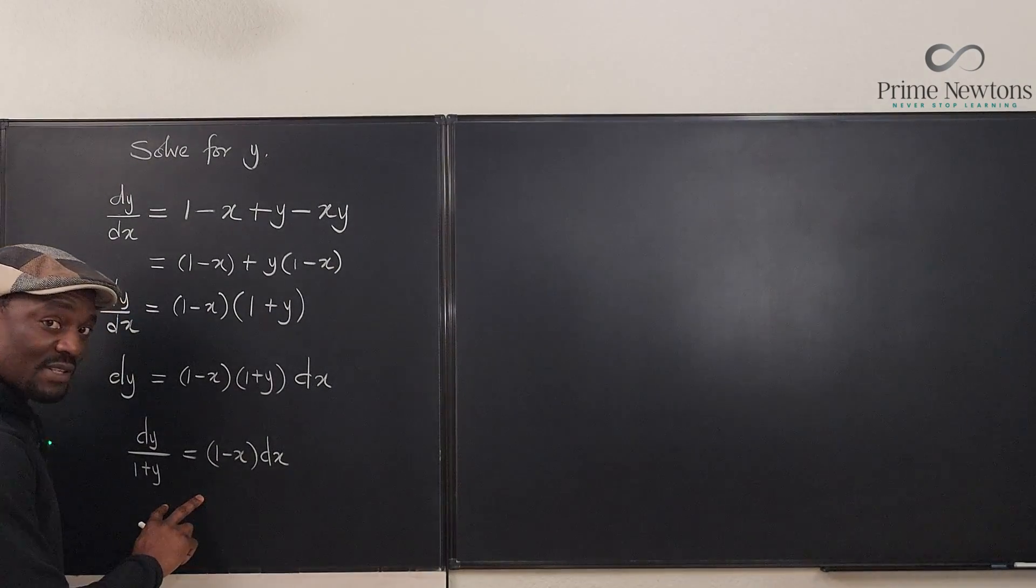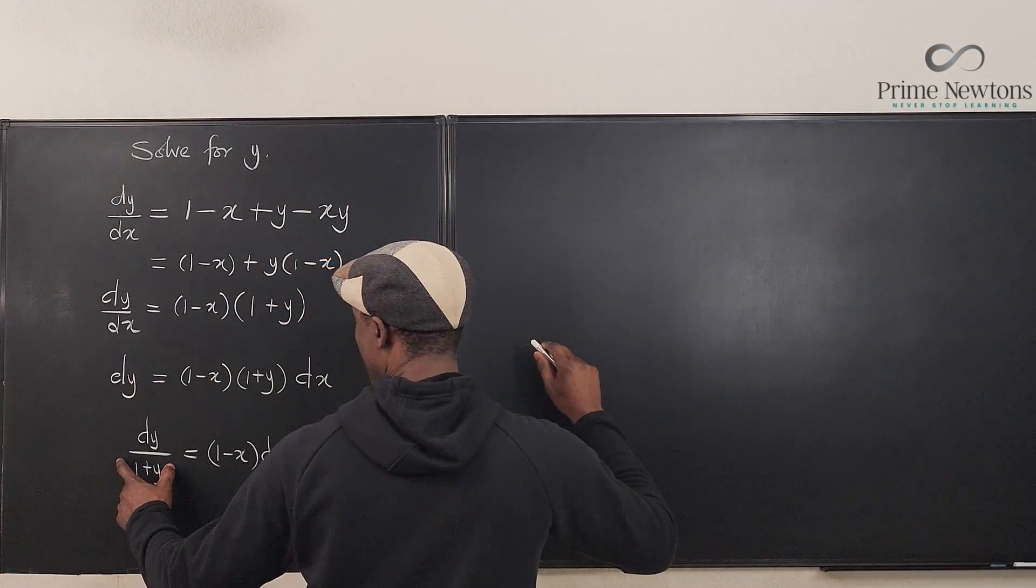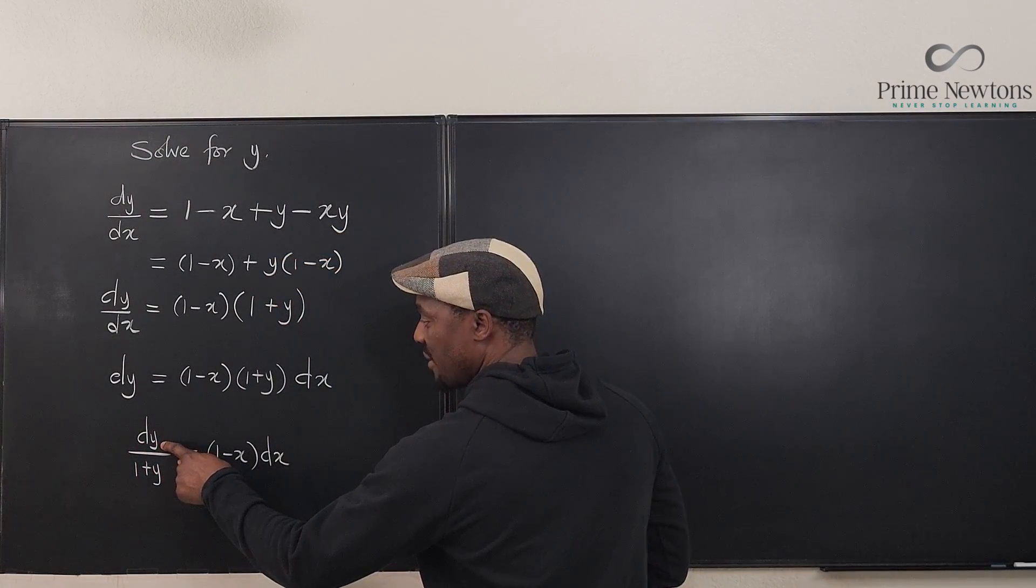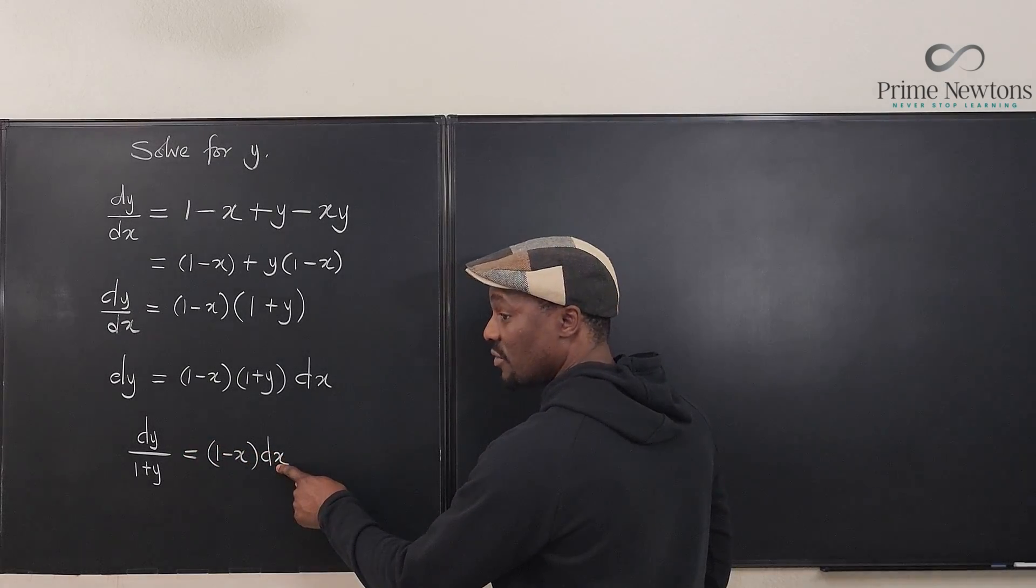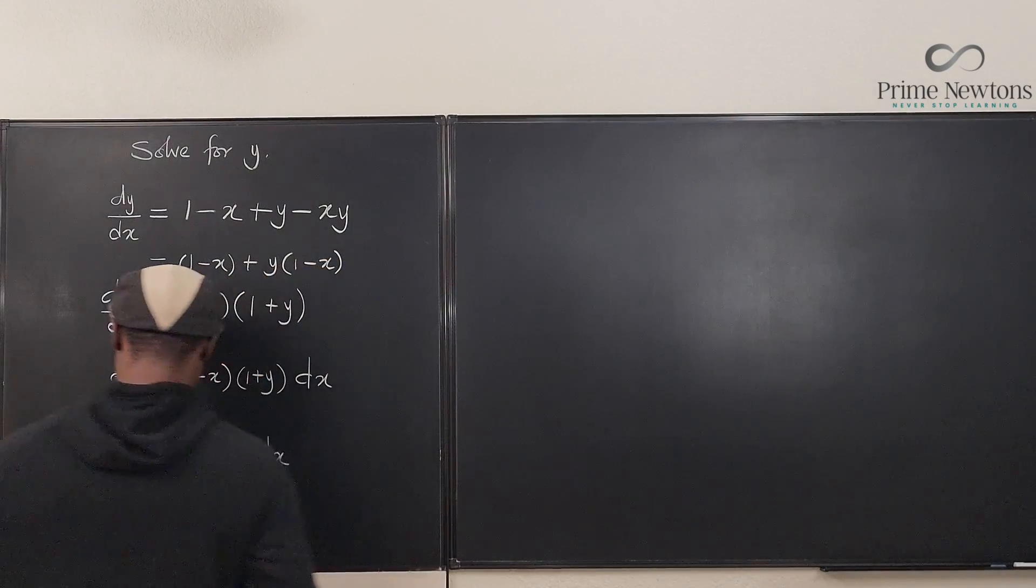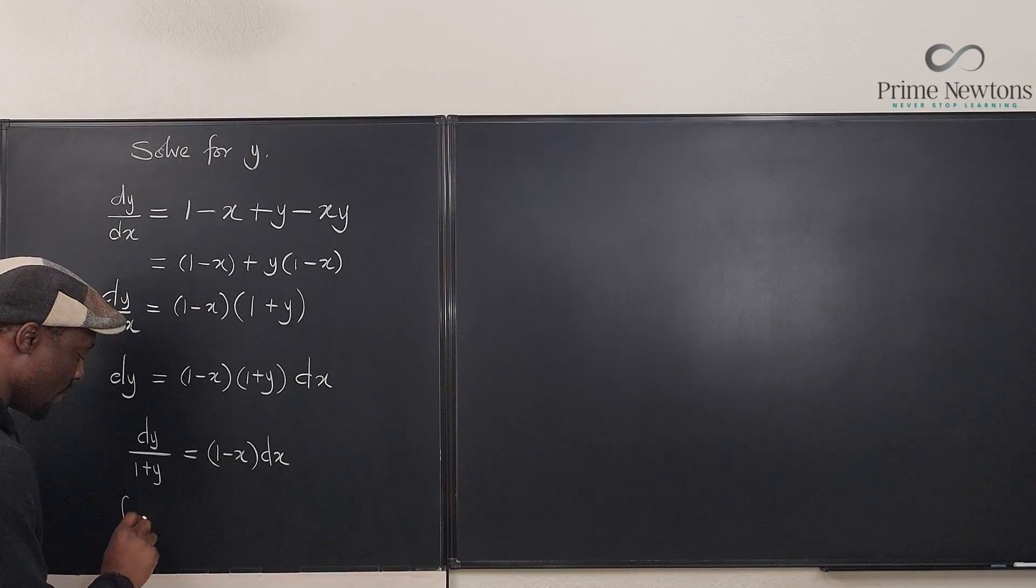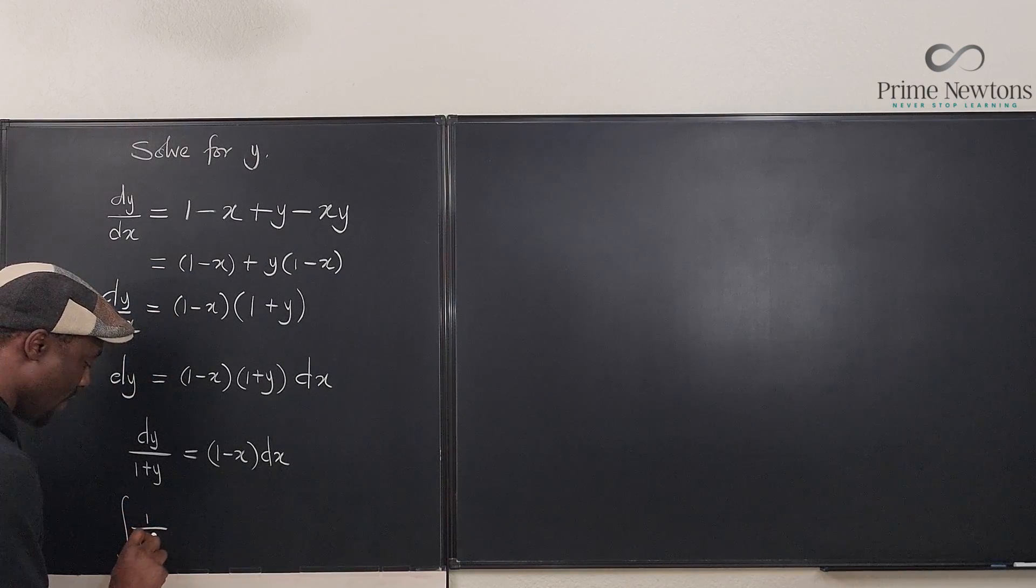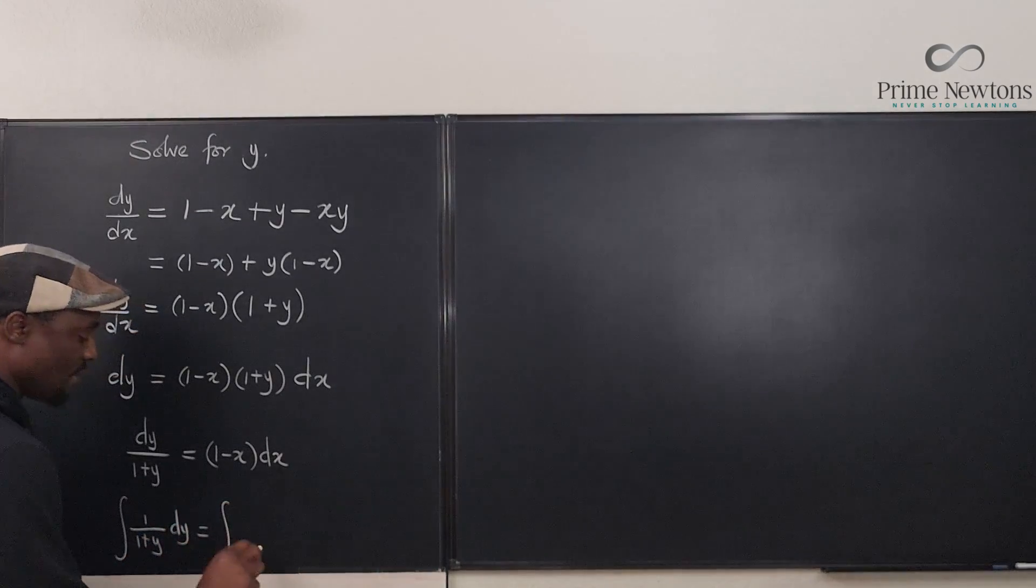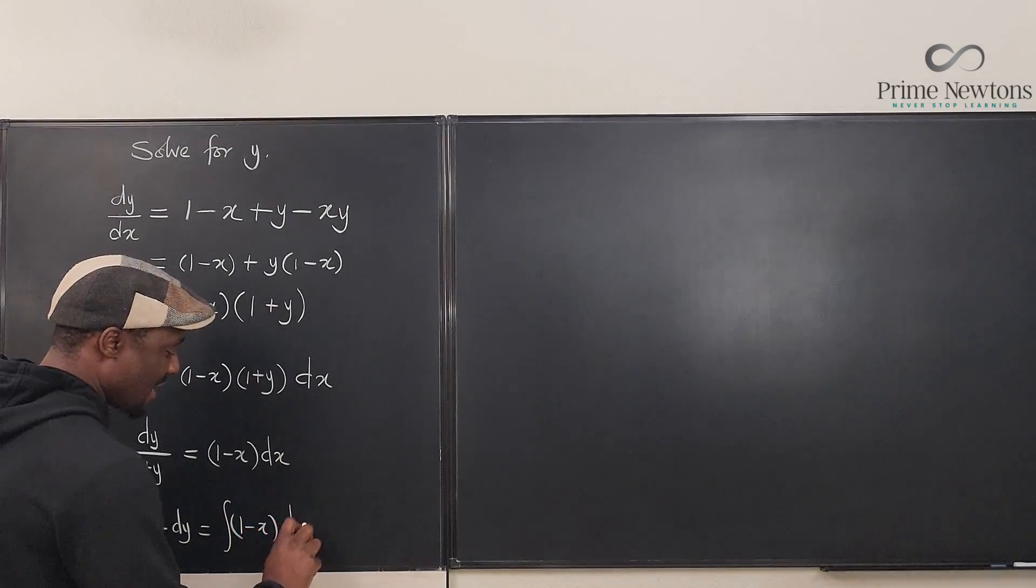This one we have to integrate with respect to y, and this we integrate with respect to x. I can say the integral of the left hand side, which is 1 over (1 plus y) dy, will be the integral of the right hand side, (1 minus x) dx.